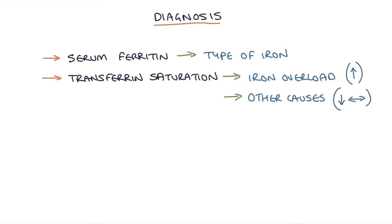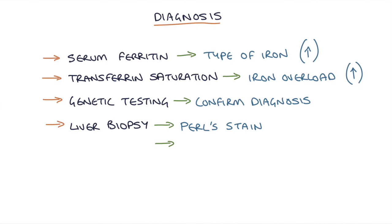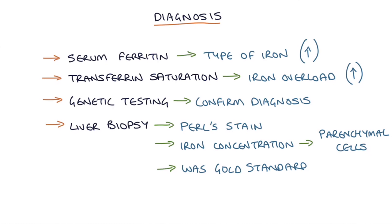If serum ferritin and transferrin saturation are both high, indicating iron overload with no other explanation, then genetic testing can be performed to confirm the diagnosis of hemochromatosis. We used to perform a liver biopsy using a Perl stain to establish iron concentration in the parenchymal cells of the liver — this used to be the gold standard investigation. Since genetic testing became available we no longer use this method, but it might come up in your exams.